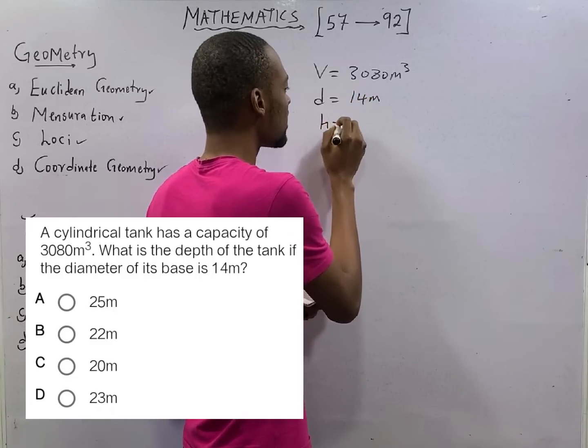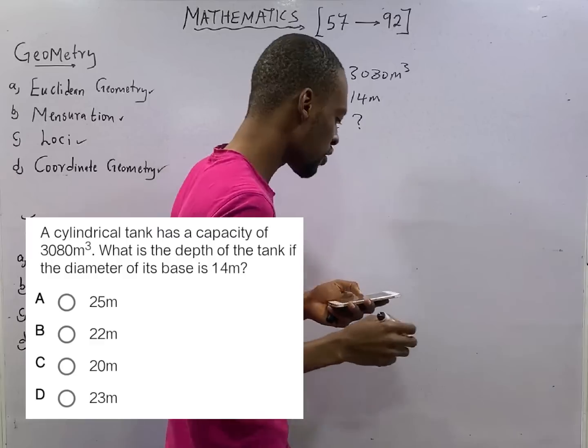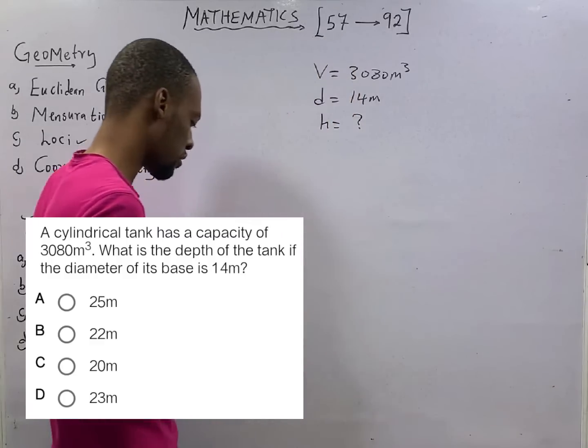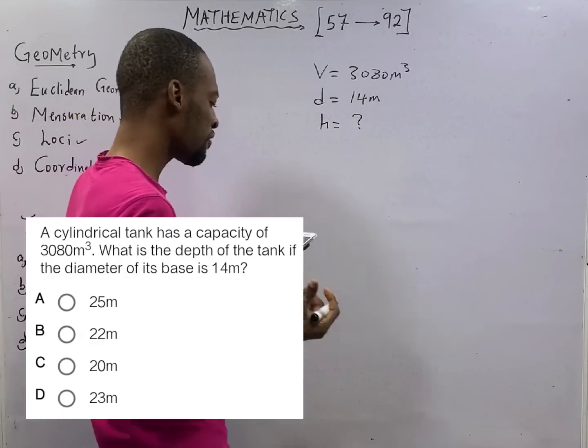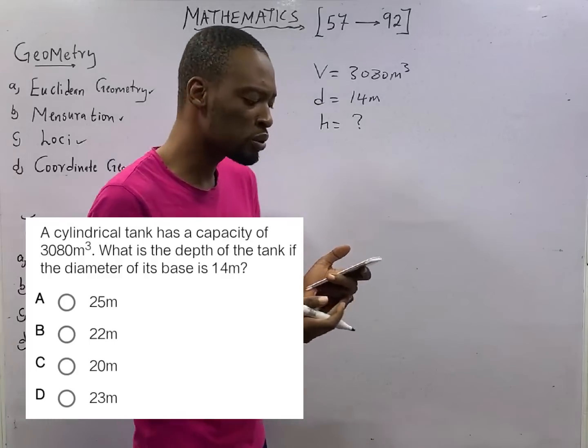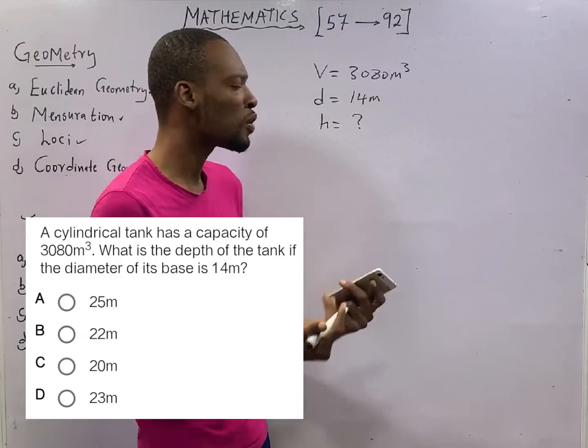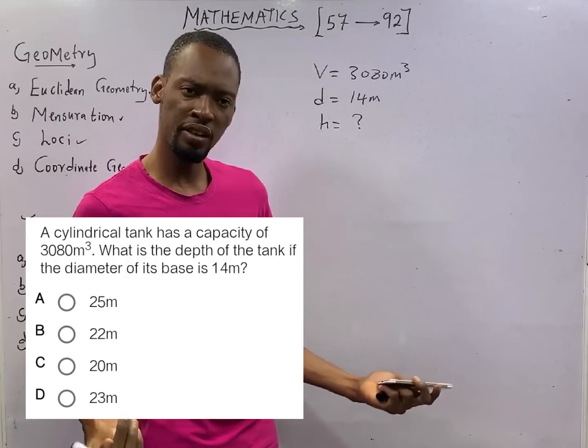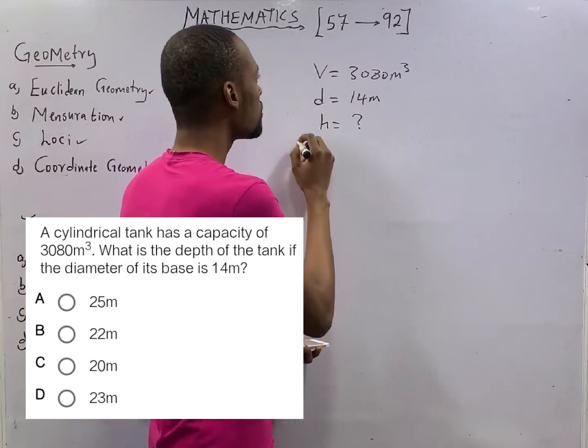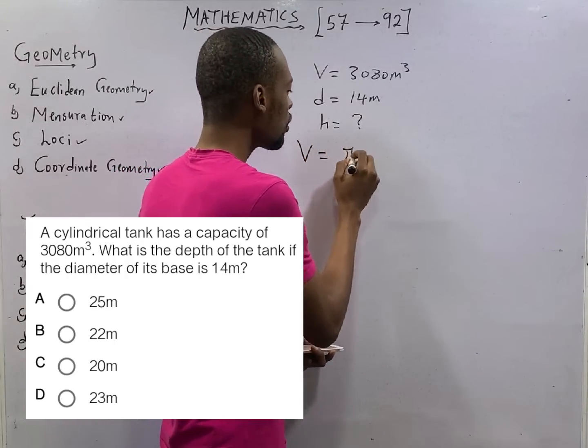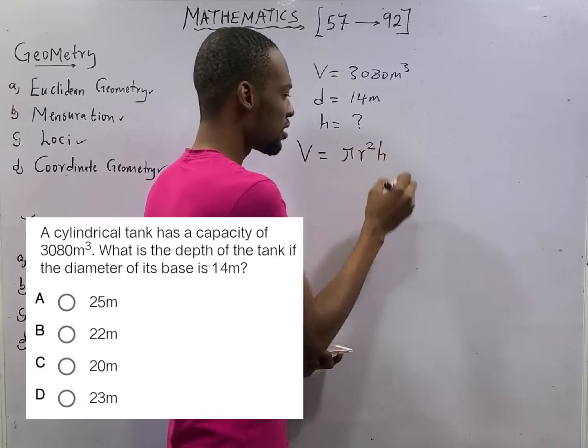Depth is height. What is the height of the cylinder? Now from the previous episode, we are able to look at the formula for the volume of a cylinder. And we found out that the volume of a cylinder is pi r squared h.